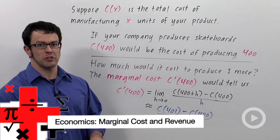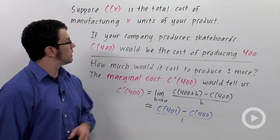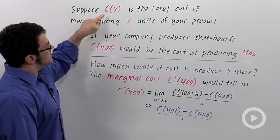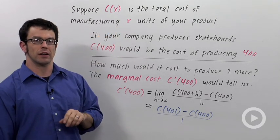In economics, there are two special terms that I need to introduce to you: marginal cost and marginal revenue. I'll explain what they are in a second. But first, let's imagine that C of X is the total cost of manufacturing X units of your product.